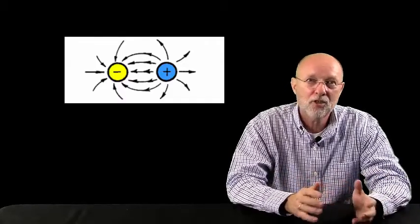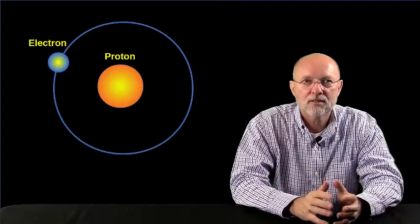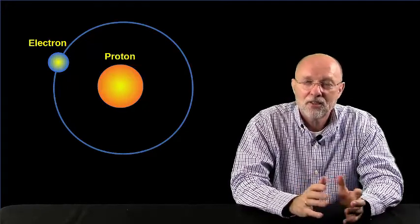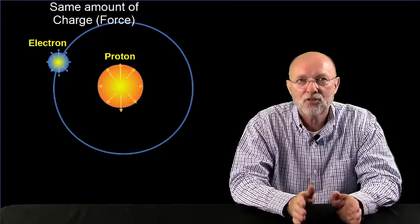So two protons will be repelled by each other, but a proton and electron will be attracted to each other. The proton resides inside the nucleus, and the electron orbits the nucleus. Because the proton and the electron are attracted to each other, the electron stays in orbit around the nucleus unless it's given enough force to push it out. Also, even though the proton is over 1800 times more massive than the electron, both the proton and the electron have the same amount of charge.